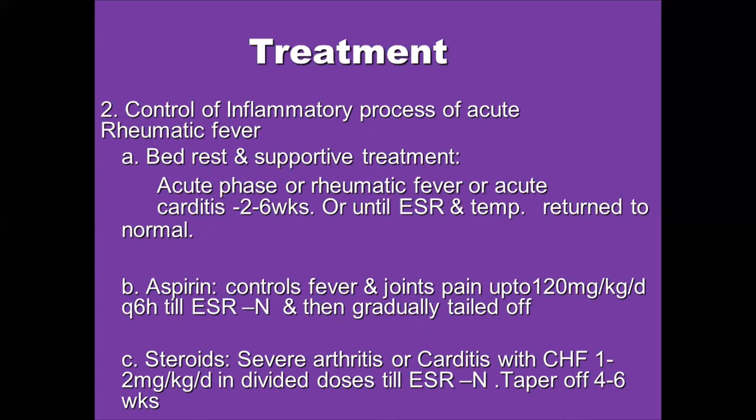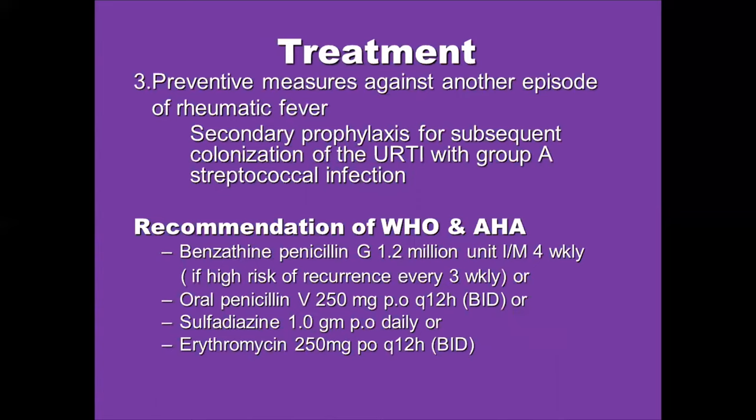For control of the inflammatory process, bed rest and supportive treatment are used. Aspirin, an NSAID, controls fever and joint pain. Steroids can be used in cases of severe arthritis and carditis, though their role is controversial. Secondary prophylaxis is very important to prevent another episode, as recurrent streptococcal infection leads to increased heart valve damage, and preventing recurrent upper respiratory tract infections prevents progression of rheumatic disease.